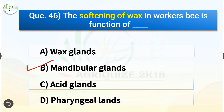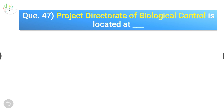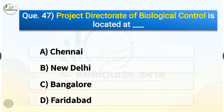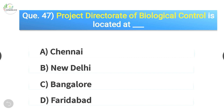Question number forty-seven: Project Directorate of Biological Control is located at which of the following? The options are: Chennai, New Delhi, Bangalore, or Faridabad. The correct answer is option C — Bangalore. Project Directorate of Biological Control is located at Bangalore.